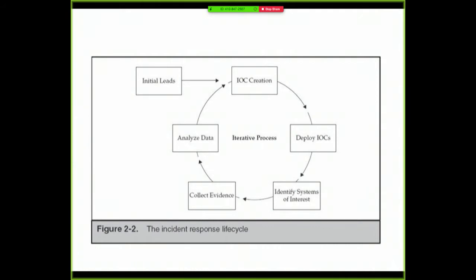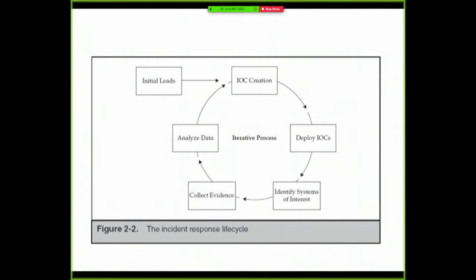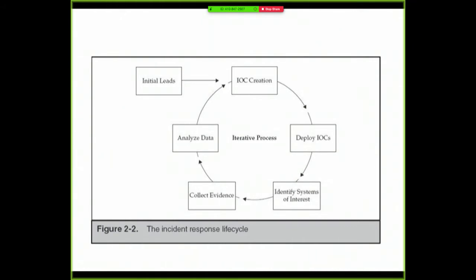Now you go in a loop. You create indicators of compromise from the information you have — a person's name, an email account, an IP address — something that gives you an idea of how to detect what's involved. Then you deploy the IOCs: send a script over the network that queries machines to see if they have the indicators you know about — registry keys, files, network traffic. You find systems of interest and analyze them to find more IOCs. You keep going around this circle, deploying IOCs to find more systems, finding those systems to find more IOCs, until you're not finding any new ones — then you call it done.